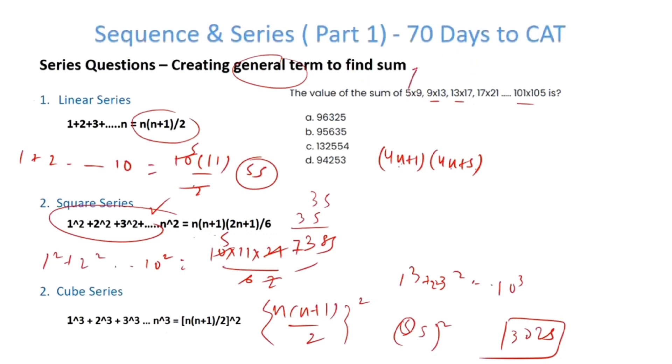Once the general term has been calculated, all I have to do is find the sum. The first term is n=1. What is the last term? 4×25+1, 4×25+5. So there are 25 terms in this series. I have to sum this up till 25.